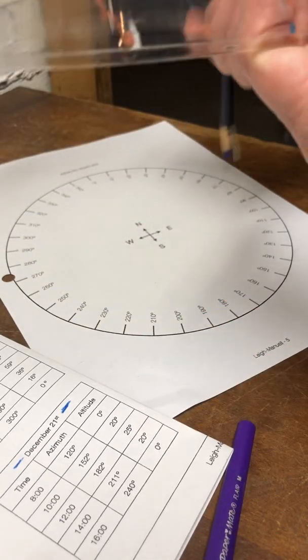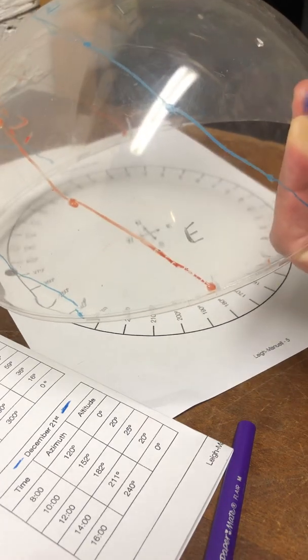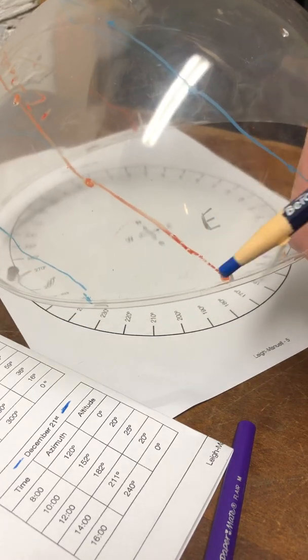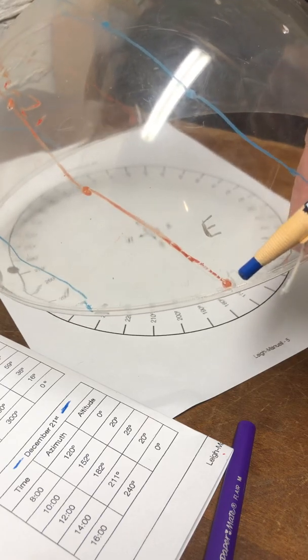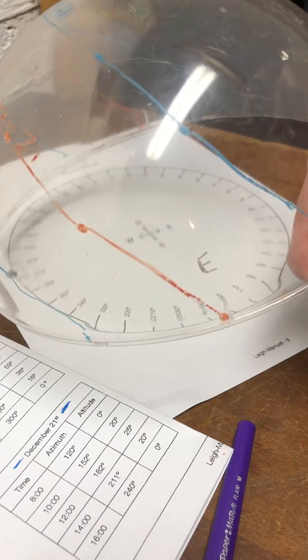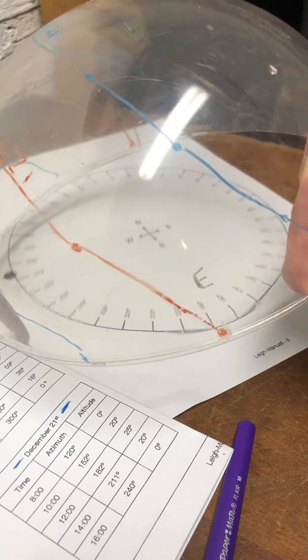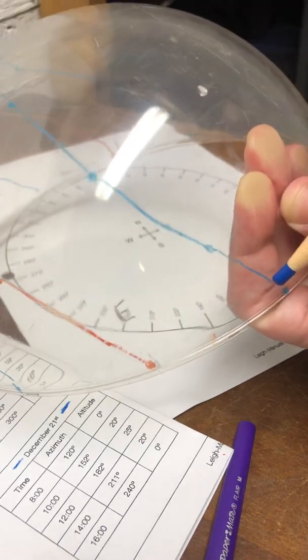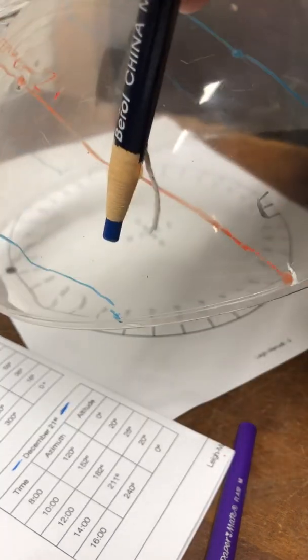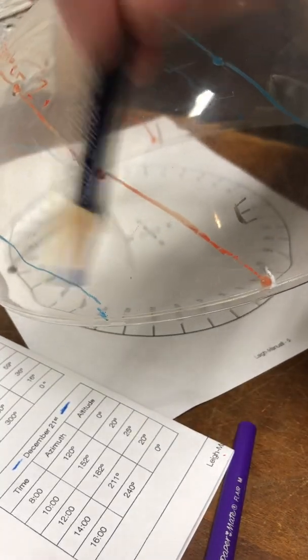But also what's of note is that if you look at the east, here's due east. Only the red line, which is March and September, the sun rises exactly in east. In June, the sun rises north of east. So it's not exactly east. It's a little bit more north of it. And in December, the sun rises south of east.